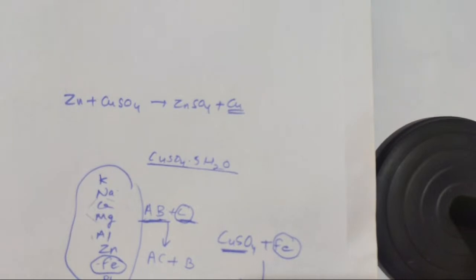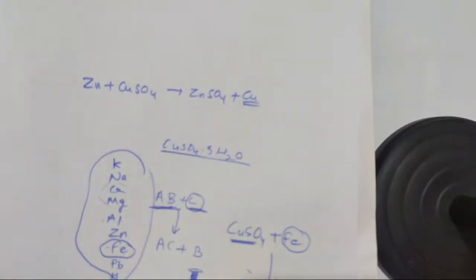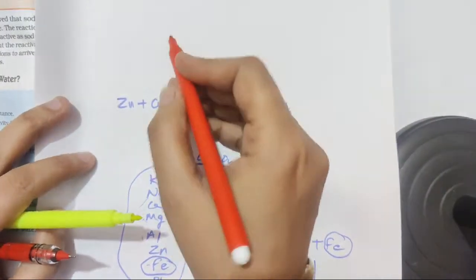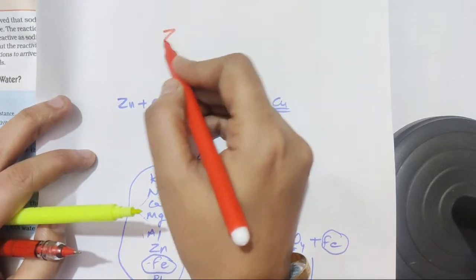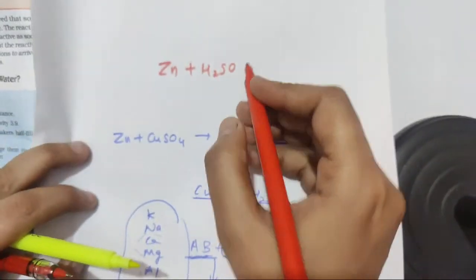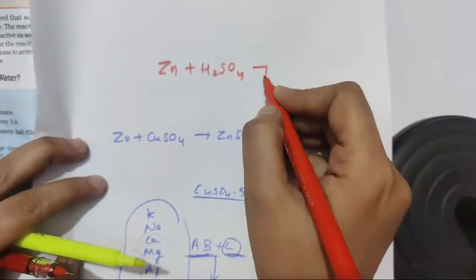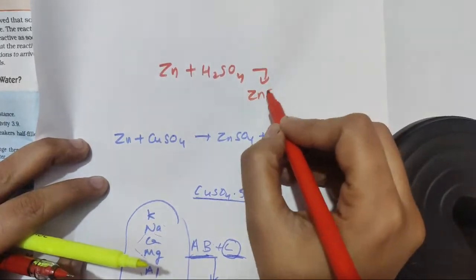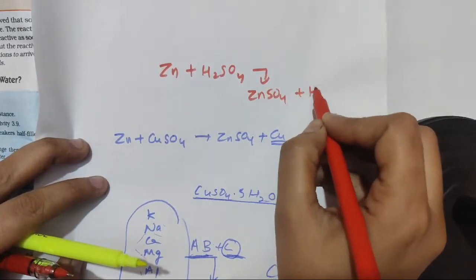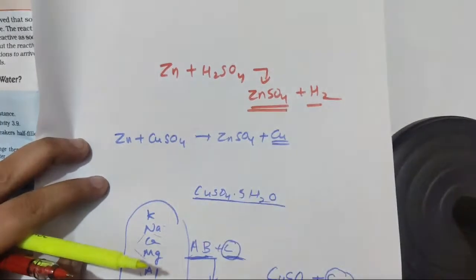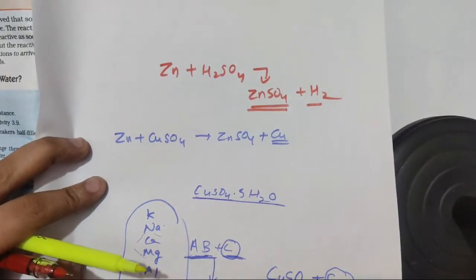For example, zinc reacts with H₂SO₄ forming ZnSO₄ and releasing hydrogen gas, which means it forms a salt and releases hydrogen gas. The second question: does metal react with all types of acid or only a few? There is one important exception given in the book.